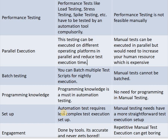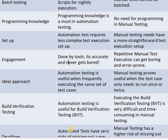Next parameter is setup. Automation testing requires less complex test execution setup, but in manual testing we need a more straightforward test execution setup. Next parameter is engagement. In automation testing, it is done by tools so it is accurate and never gets bored, but in manual testing, repetitive execution can get boring and error-prone.